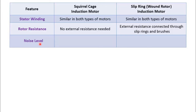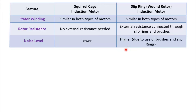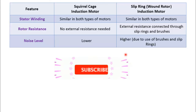Noise level in squirrel cage motor is low, whereas the noise level is high due to use of brushes and slip rings. I hope you clearly understand the differences between squirrel cage motor and slip ring or wound rotor induction motors.